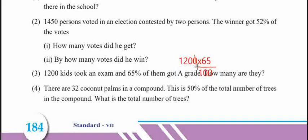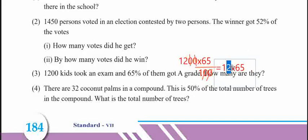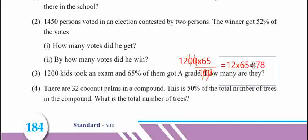We cancel the zeros — there are zeros in the calculation. The other answer is 12 into 65, which is equal to 12 into 65. The answer is 780.